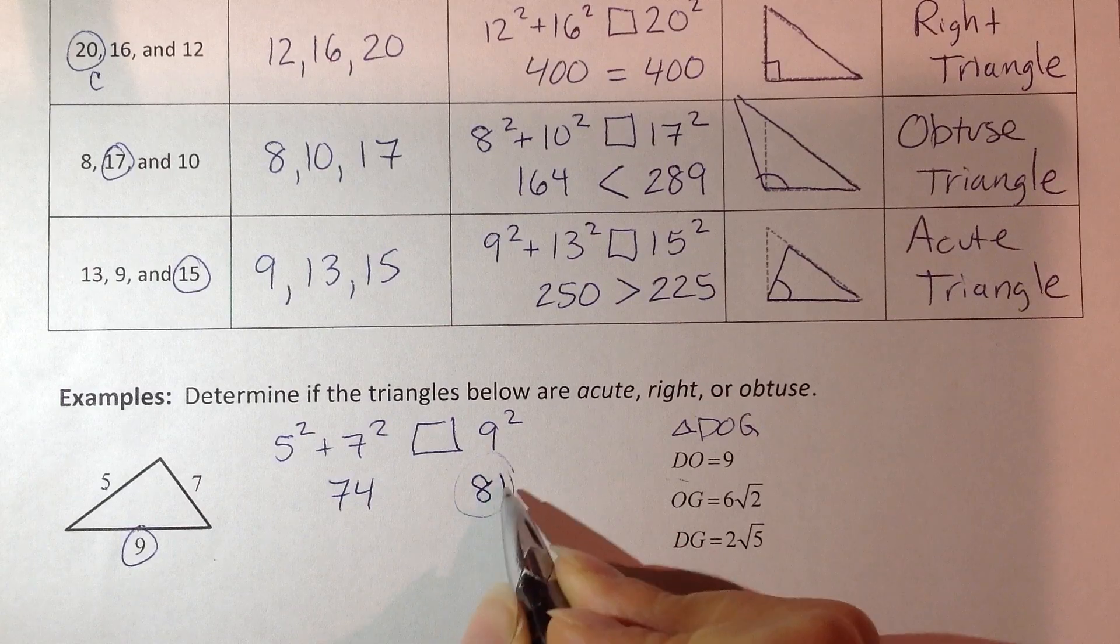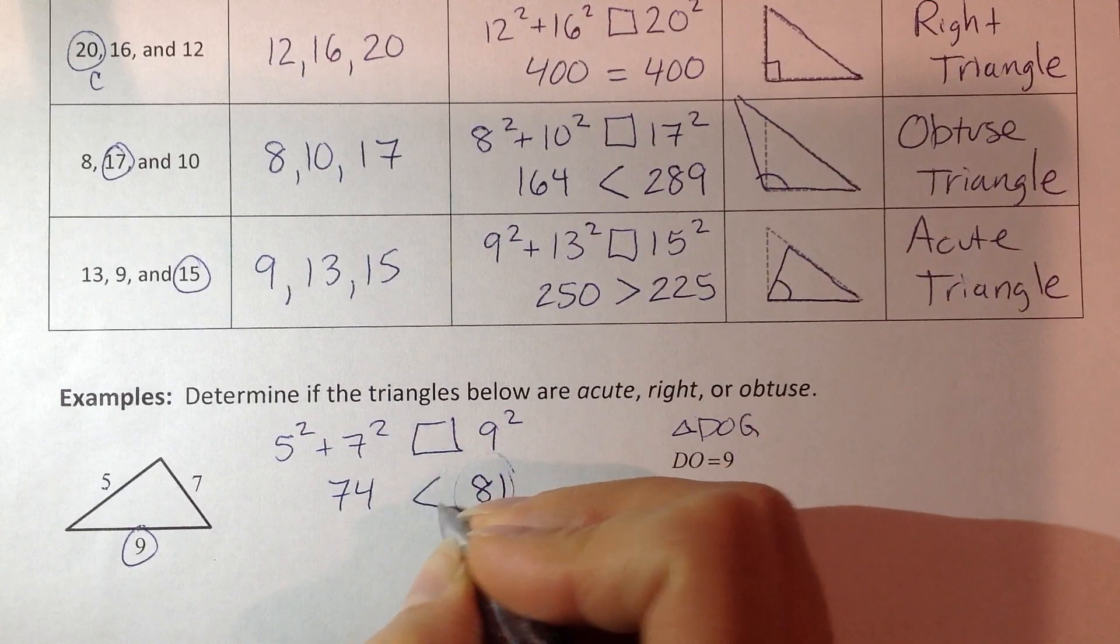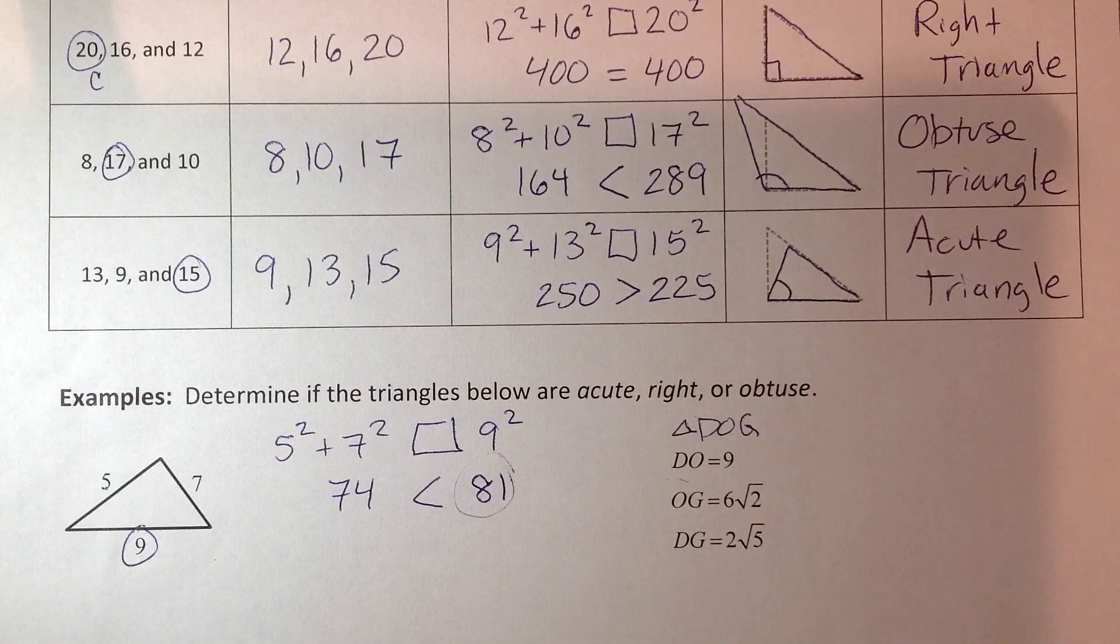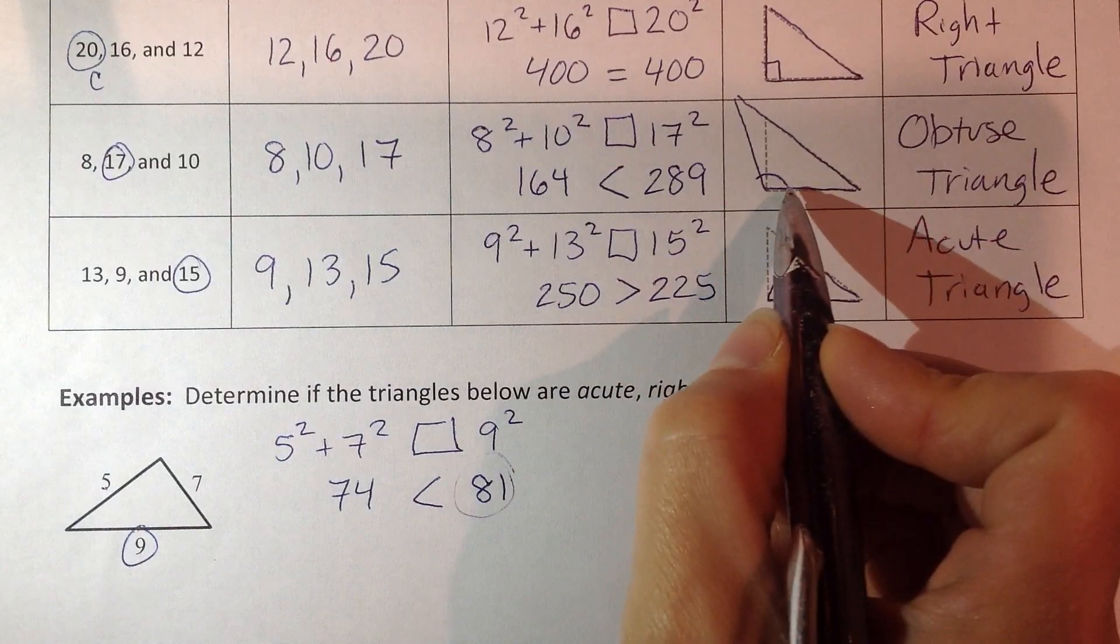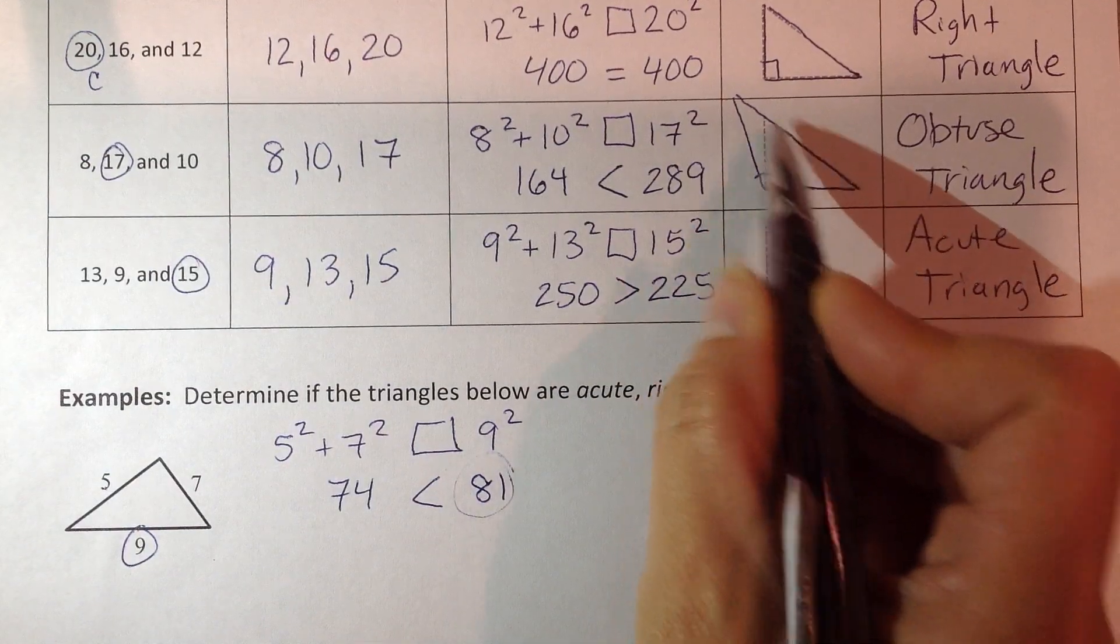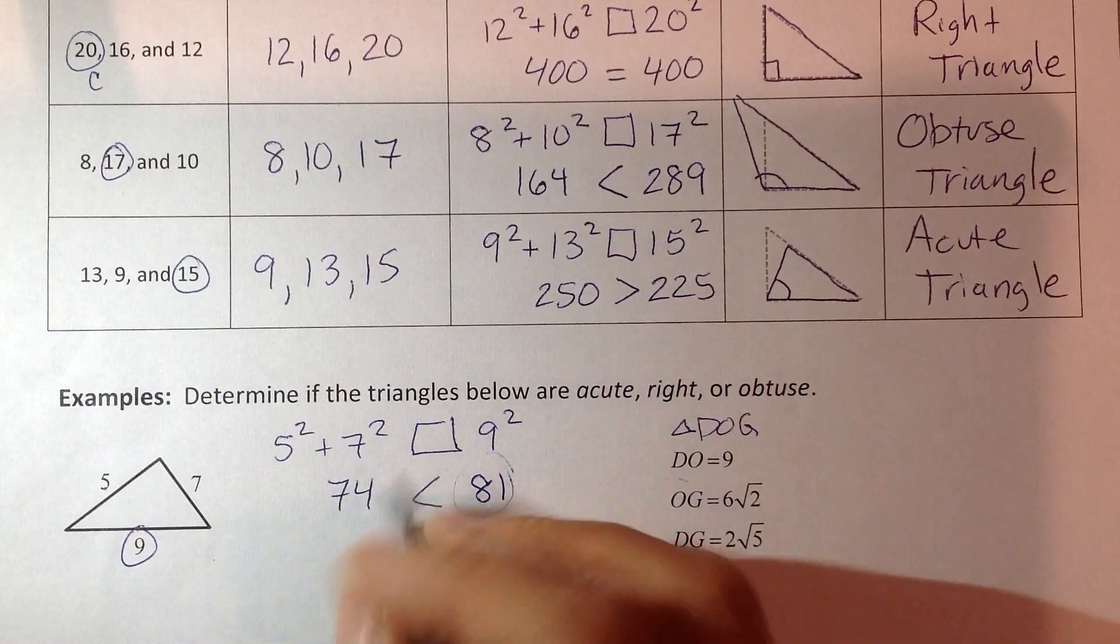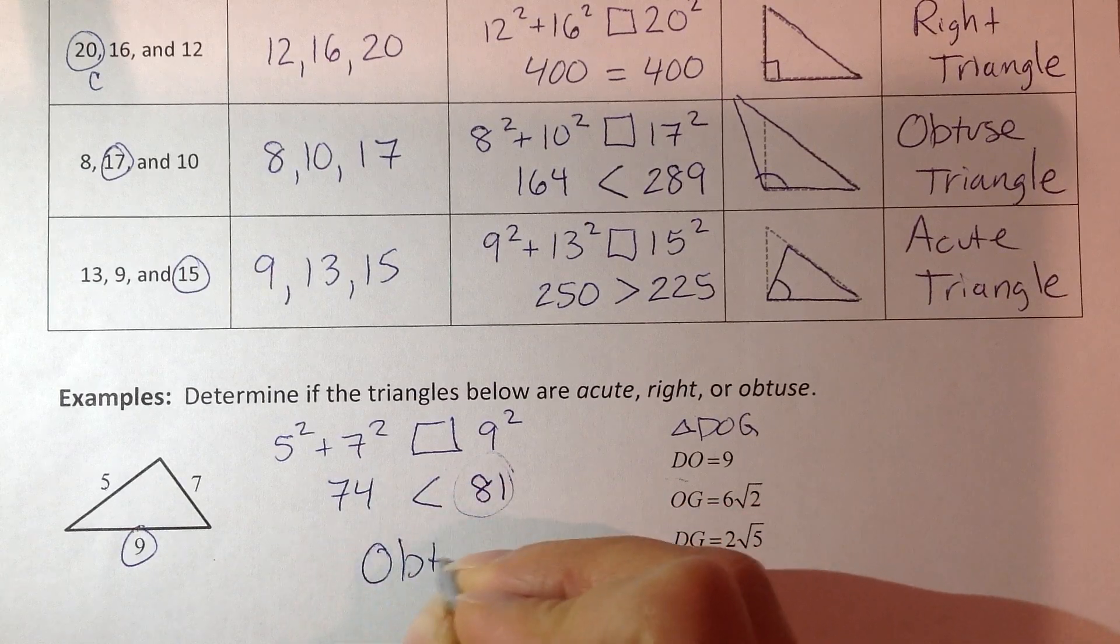And 9 squared is 81. So what happened to C? It got bigger. That right angle had to extend, had to get bigger as we extended that third side. So this is obtuse.